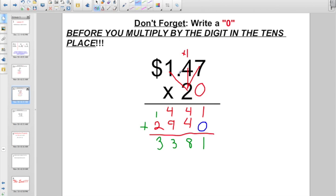Stop. We are not done yet. Remember, this is a money problem. So, just dollar sign and decimal point in the usual old places. Giving us $33.81. The secret is don't forget to write a zero before you multiply by the digit in the tens place.